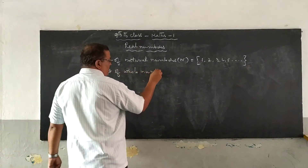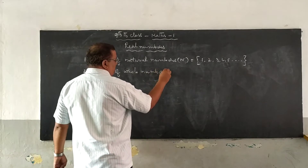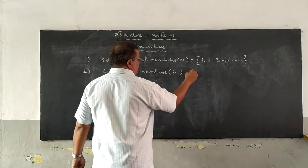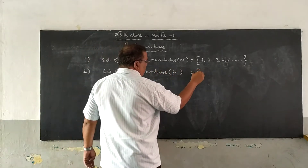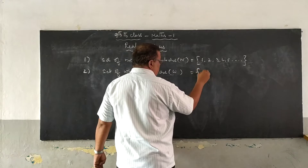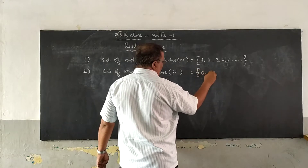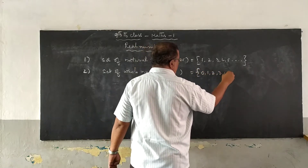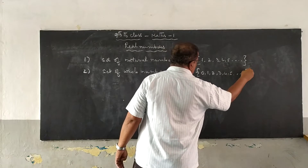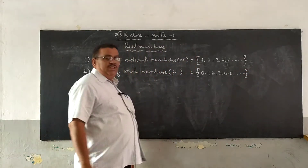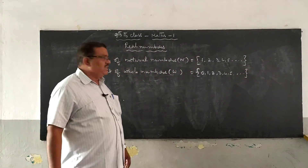Whole numbers are represented by W. These are 0, 1, 2, 3, 4, 5, and so on, enclosed between the flower braces (curly brackets).